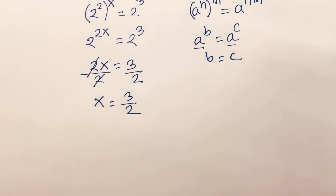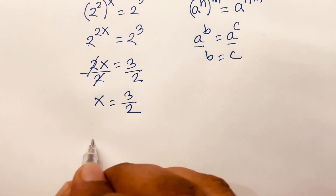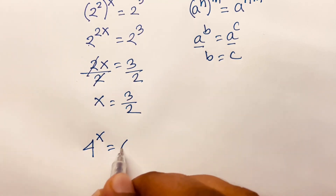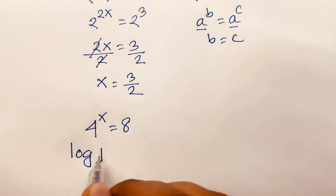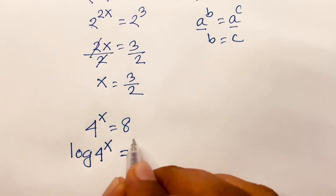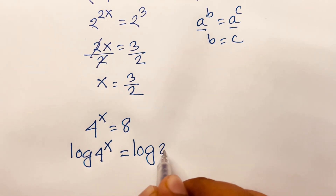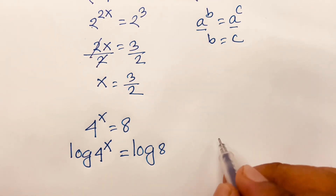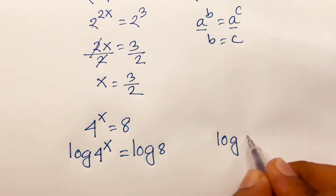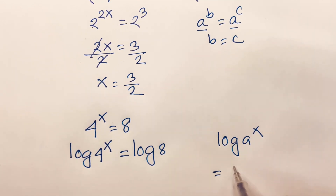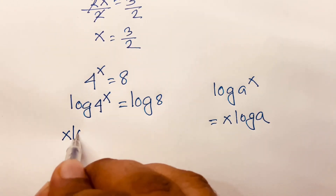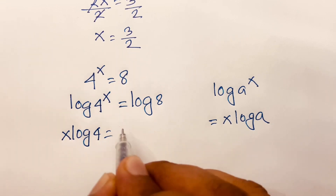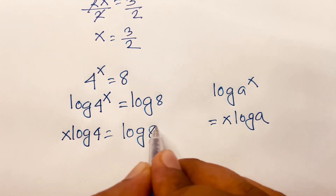I will now solve this question using a second method. Starting with 4 to the power x is equal to 8, if I apply log to both sides, log of 4 to the power x is equal to log 8. We know that log a to the power x is equal to x log a. If I follow this rule, I can say x log 4 is equal to log 8.